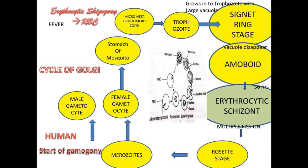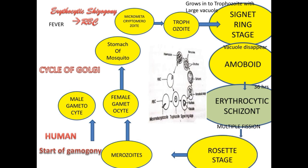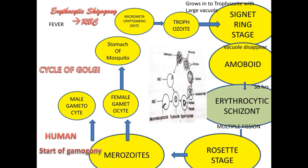After the amoeboid stage, the parasite becomes spherical and changes into the erythrocytic schizont. The schizont undergoes multiple fission and forms the rosette stage. In the rosette stage, the merozoites are arranged around the residual body like the petals of a flower.